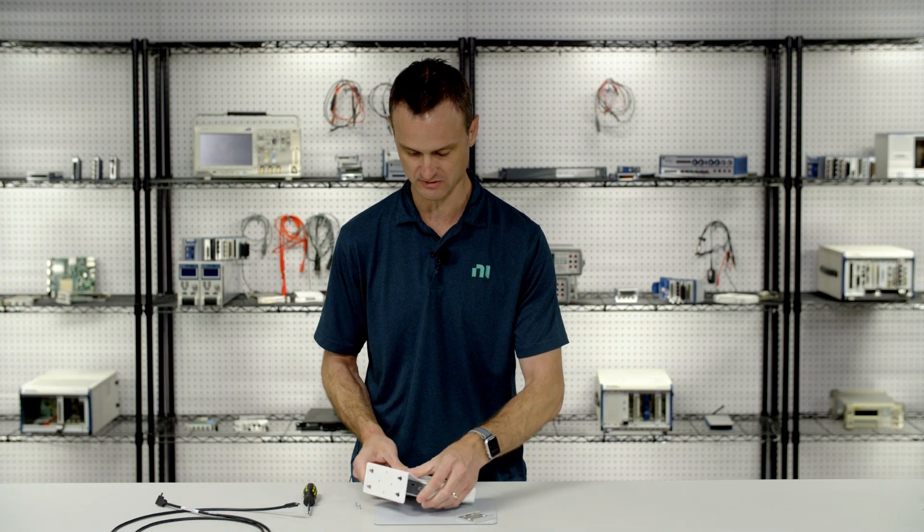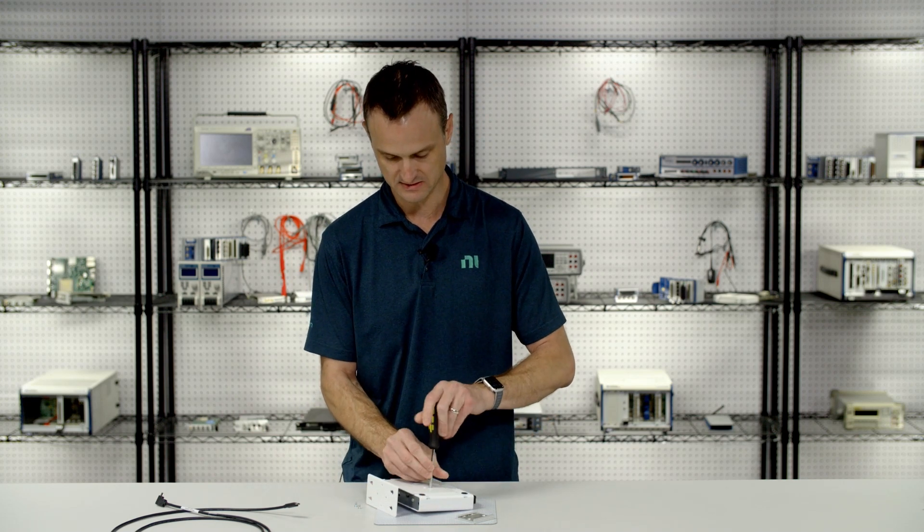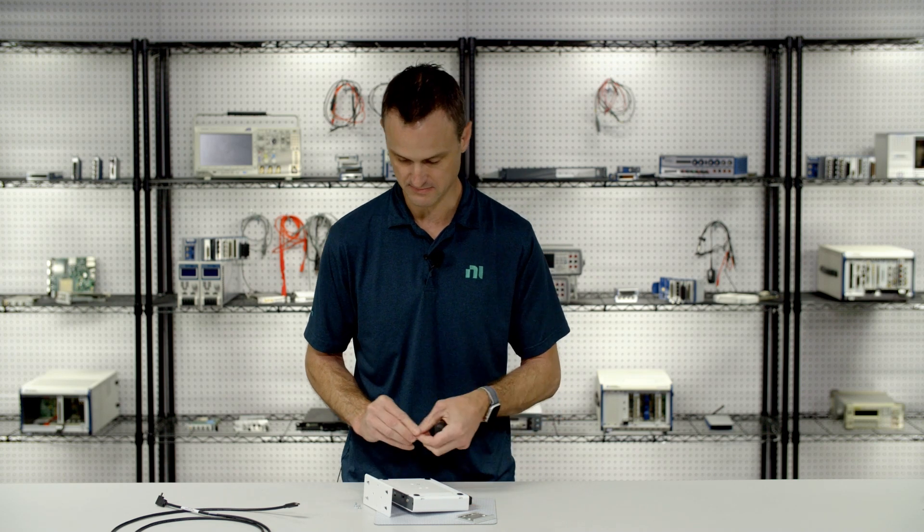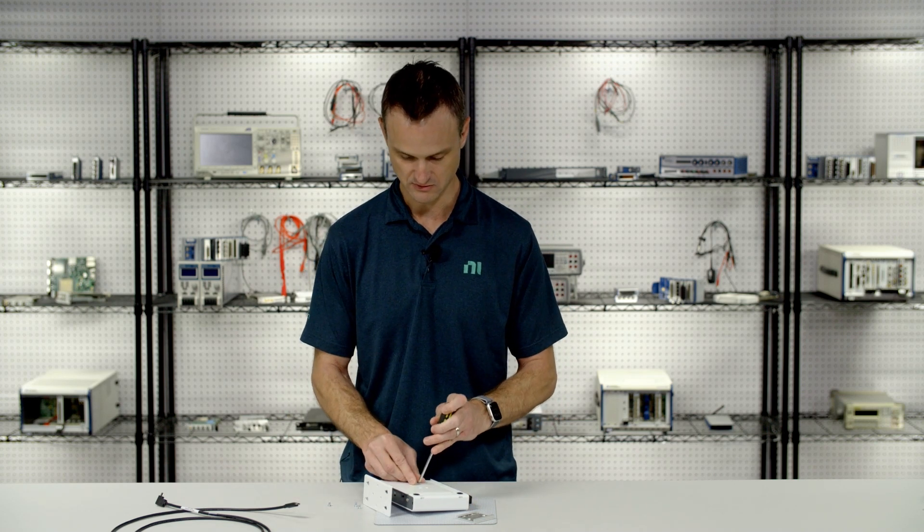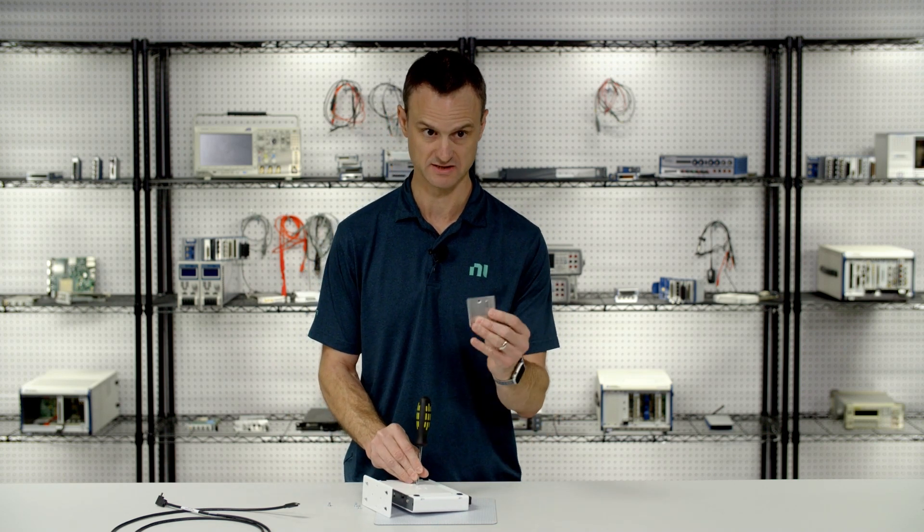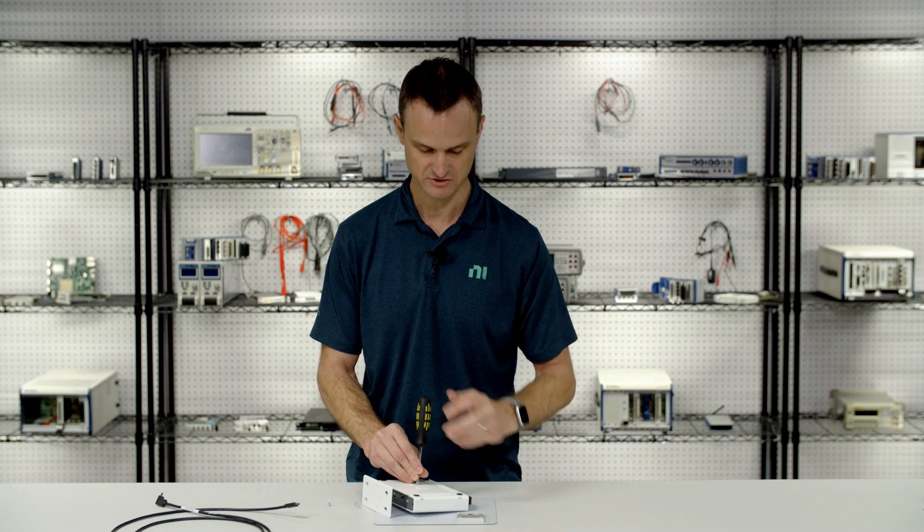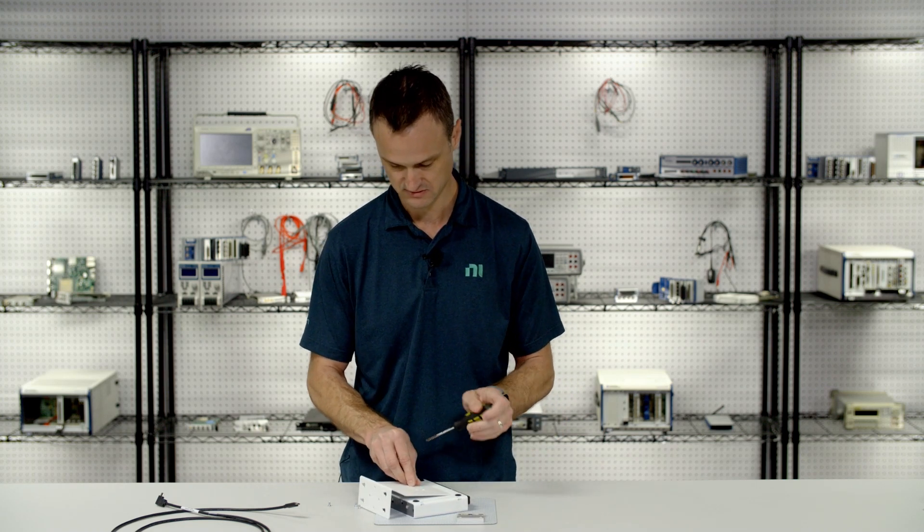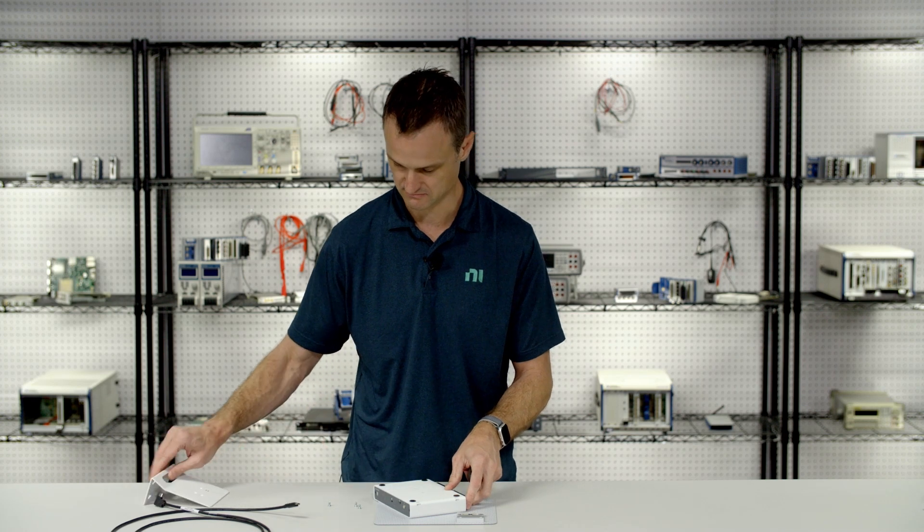Now the last thing I want to show you is if you want to do a DIN rail mount, you can just buy separate accessories. Just this clip. Just the DIN rail clip and two screws. So no bracket. Move that off to the side.